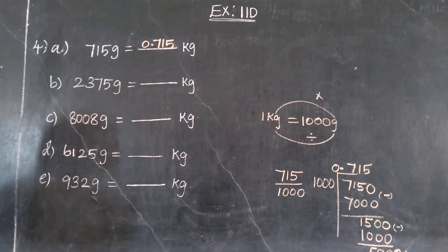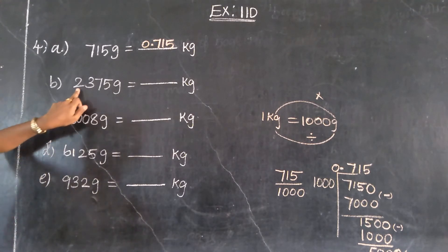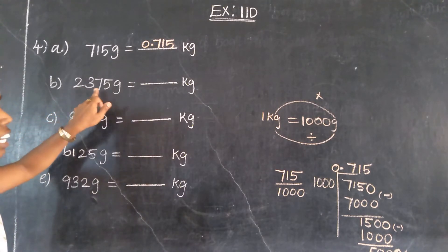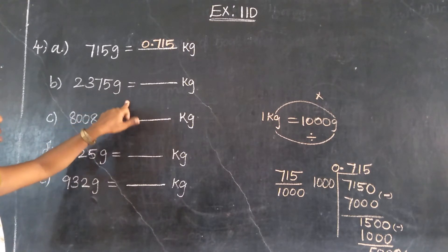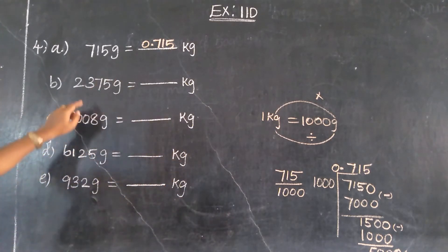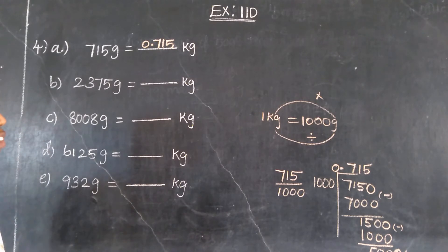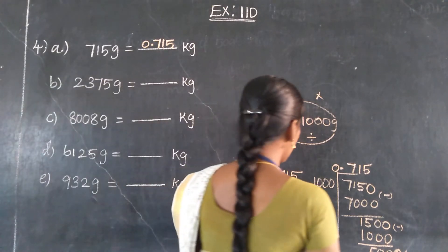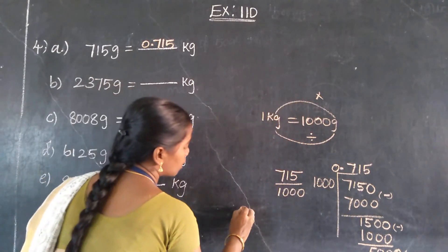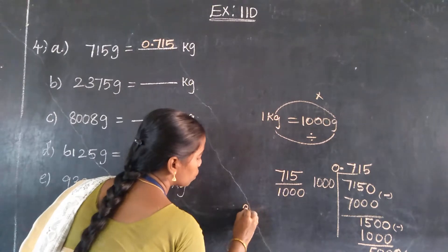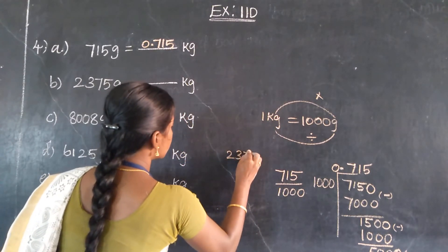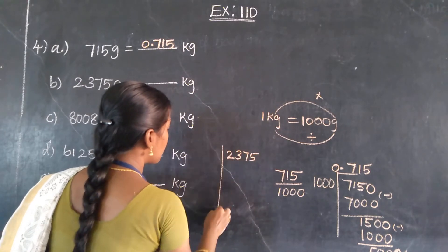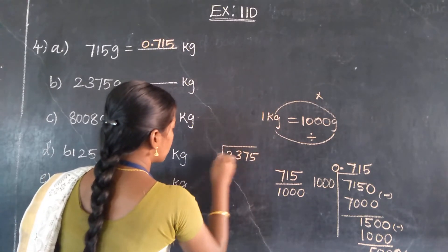It is the same procedure for the second problem. Then 2375. 2375 — divide this number. It is a 4-digit number. In this 4-digit number, divide by law. 2375 divided by 1000.